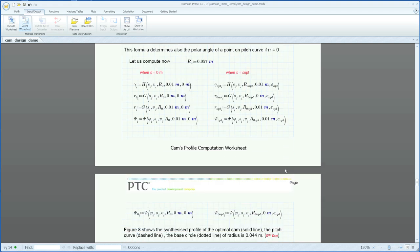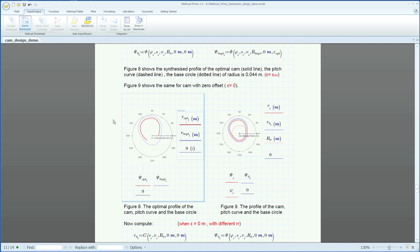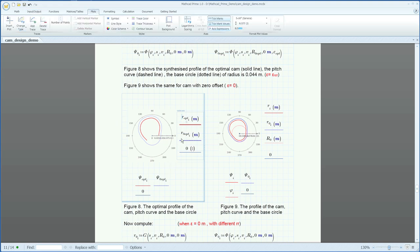With the optimal design parameters established, the cam profile is generated in a polar plot within MathCAD Prime. As an additional benefit, this profile data can then be passed directly into Creo Elements Pro to directly drive the resulting geometric model.